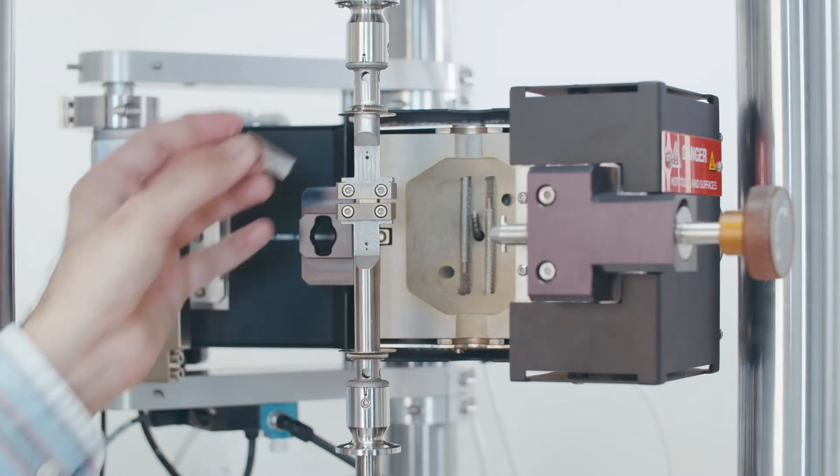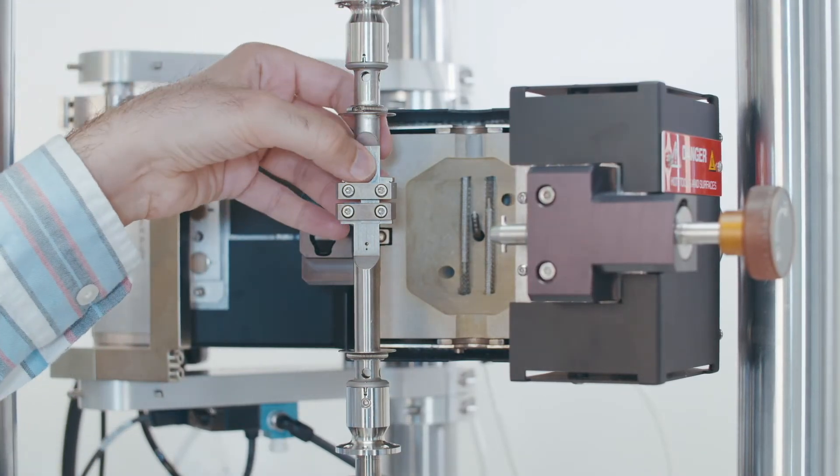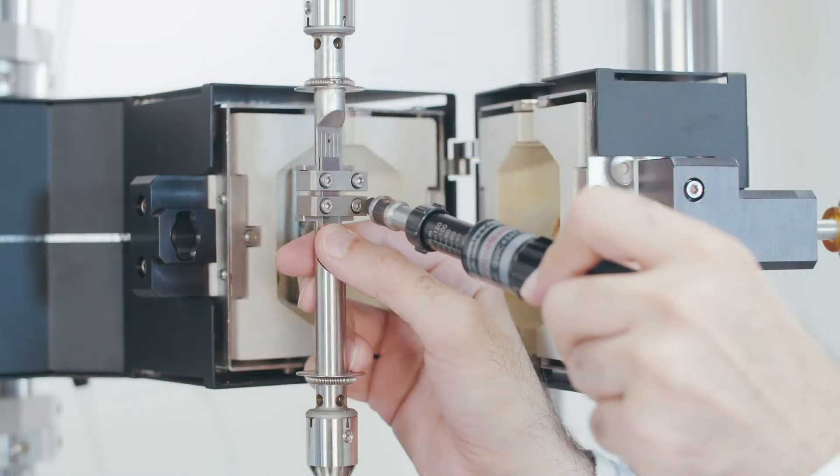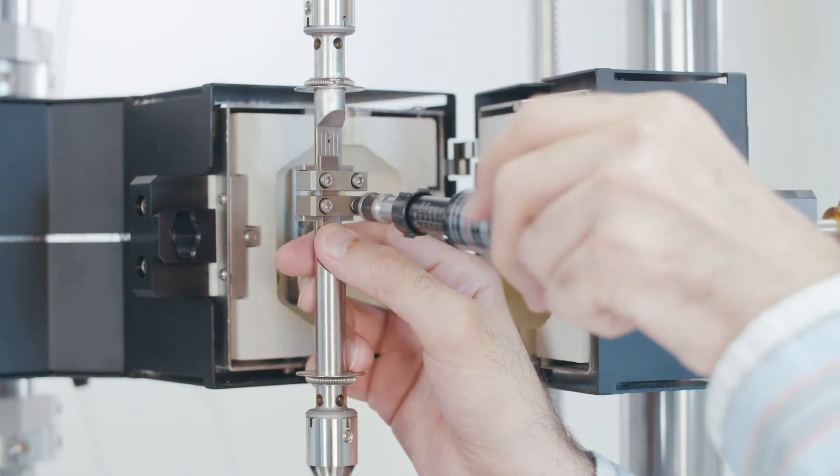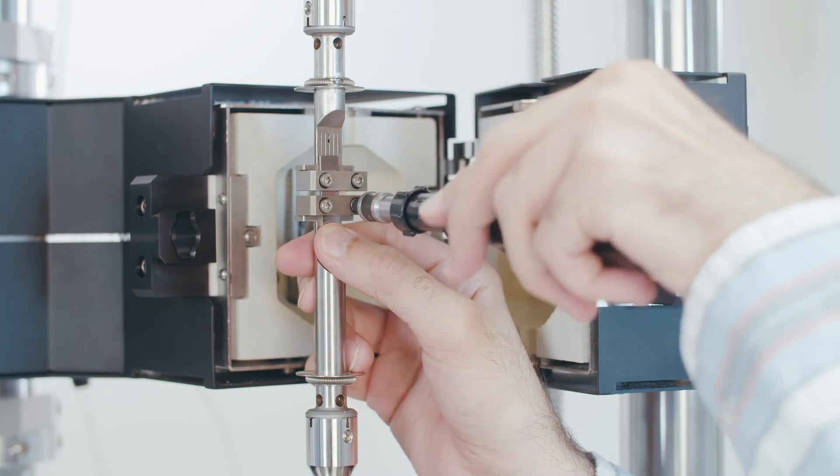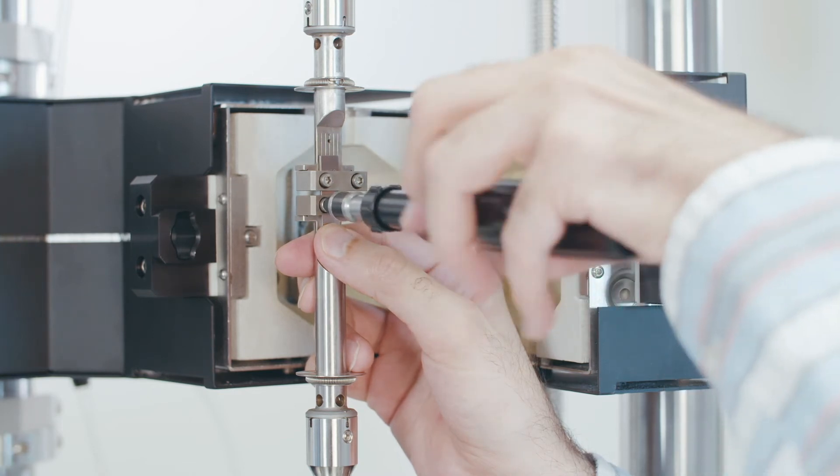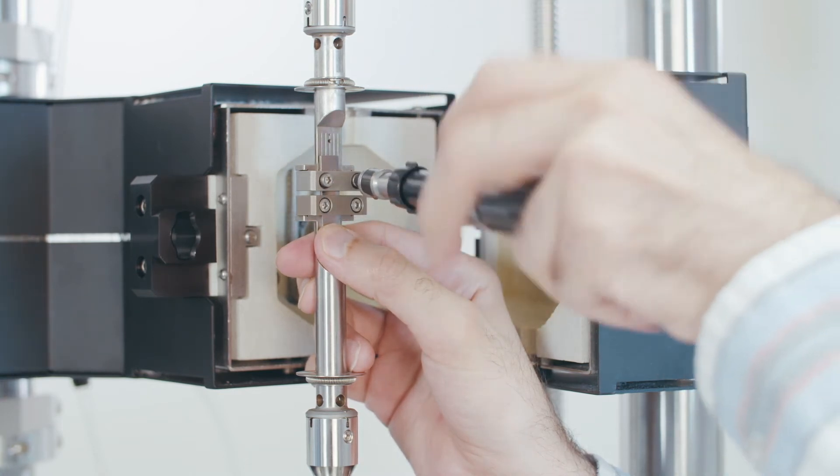The second step is completing compliance compensation routine. Choose the appropriate rigid sample from your rigid sample kit based on your testing geometry. For tensile grips, we will use a rectangular stainless steel bar.